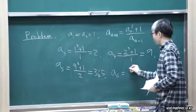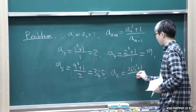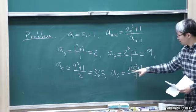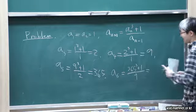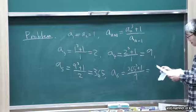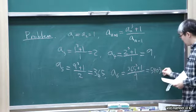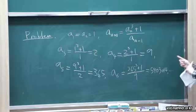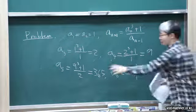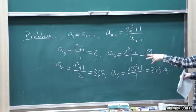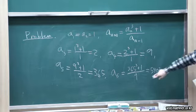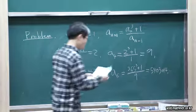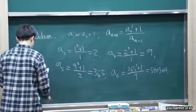A5 is 9 cubed plus 1 divided by 2, which is 365. And then the next one is 365 cubed plus 1 divided by 9, and this one is divisible by 9, so it becomes 5,403,014. And then the next one is miraculously divisible by 365, so it becomes an integer. And the next one is divisible by this weird number, so everything becomes an integer, which is very surprising.